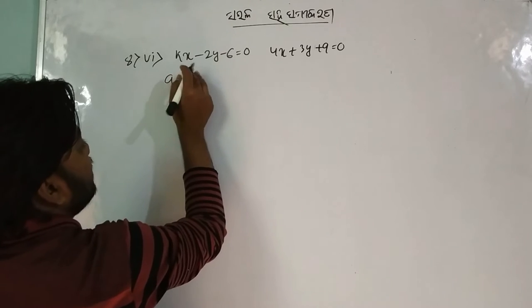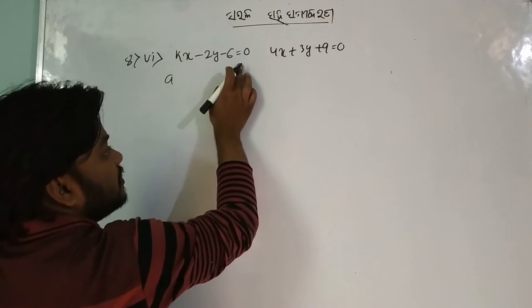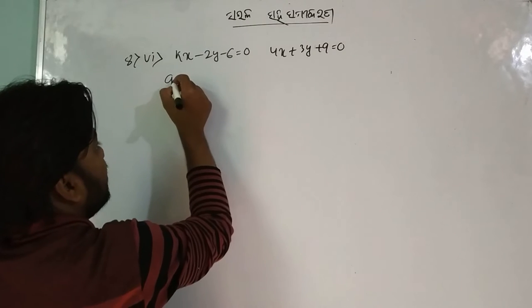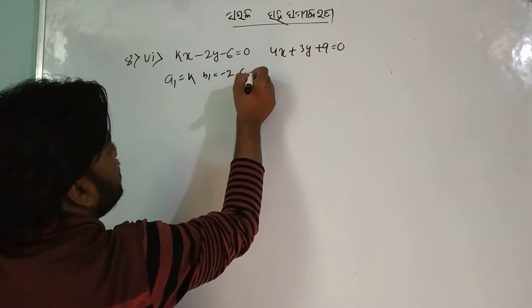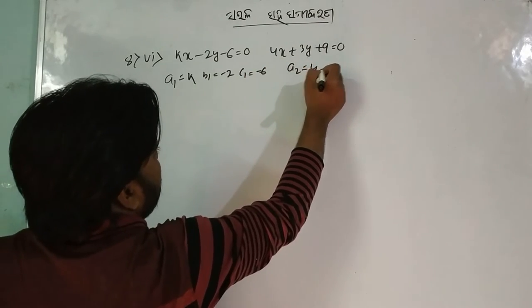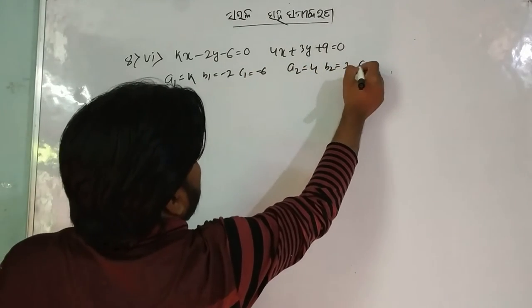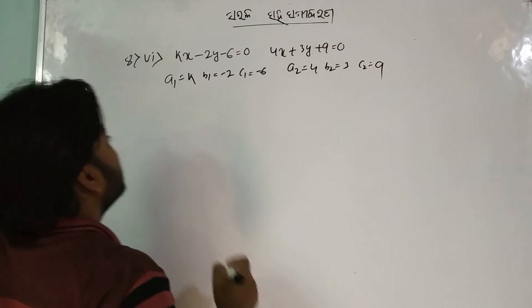A1x plus b1y plus c1. Then we will write a1 is equal to K, b1 is equal to minus 2, c1 is equal to minus 6. a2 is equal to 4, b2 is equal to 3, c2 is equal to 9.